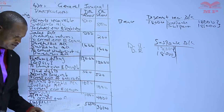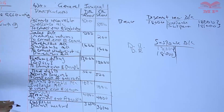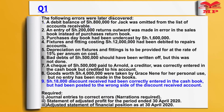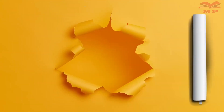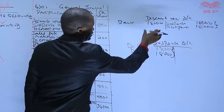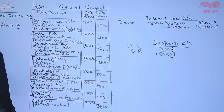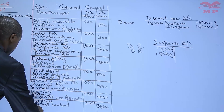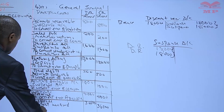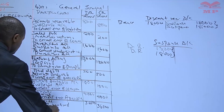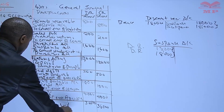What kind of error is this? We read that it had been posted to the wrong side of the discount account. The account itself is correct but the wrong side was used. That is an error of commission.